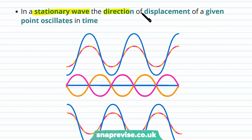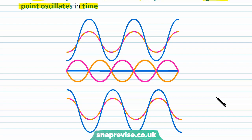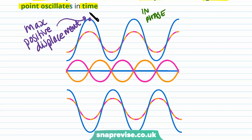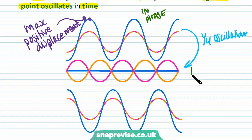In a stationary wave, the direction of displacement of a given point oscillates in time. Consider a specific point: when the two progressive waves are in phase, at that point we get maximum positive displacement. After a quarter of an oscillation of our stationary wave, the two progressive waves are in antiphase.